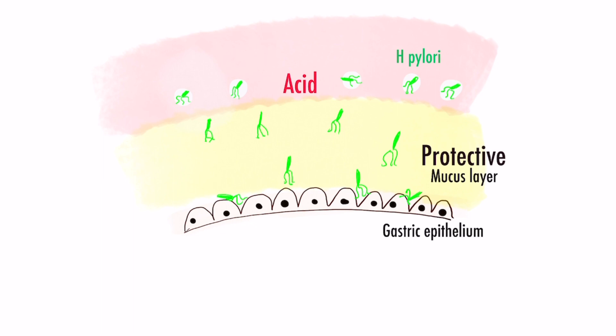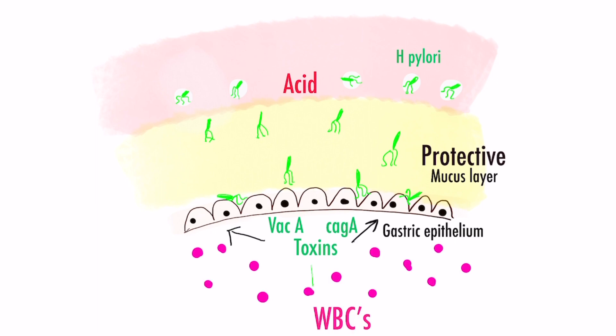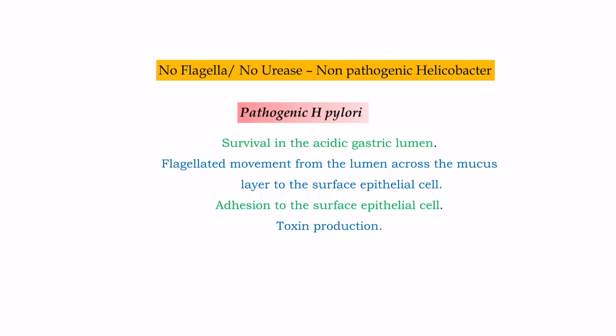Once H. pylori reaches the epithelium, it does not directly invade epithelial cells but attaches to them and produces several toxins like VacA and CagA. These toxins incite an intense reaction from immune cells, causing gastric mucosal inflammation. So if Helicobacter is not carrying flagella or urease enzyme, it is of a non-pathogenic type, as it cannot survive in the gastric acid environment.